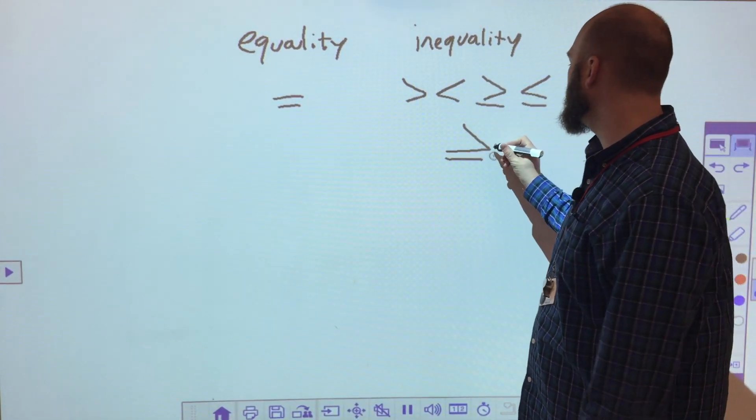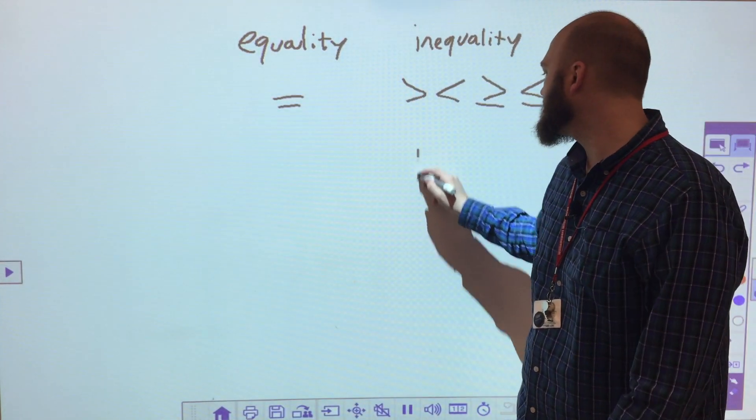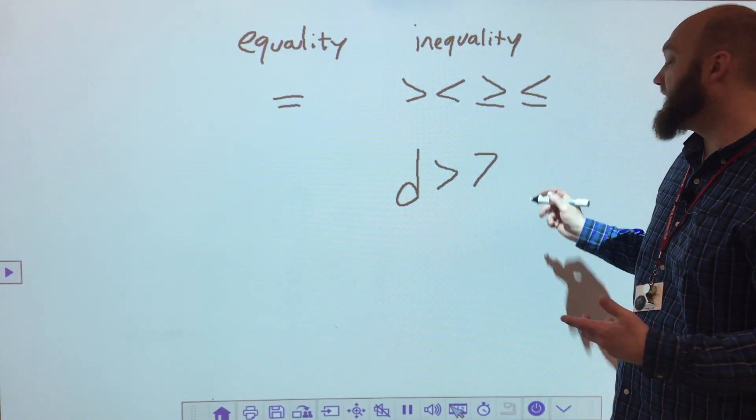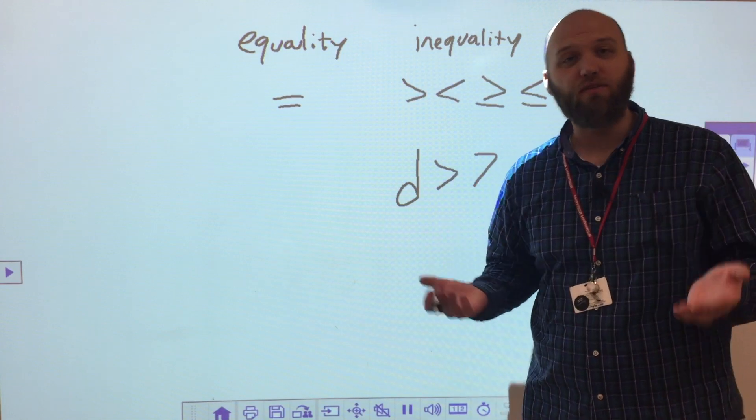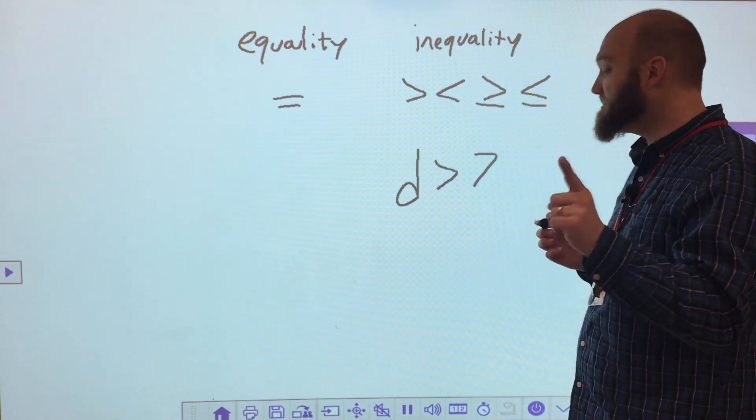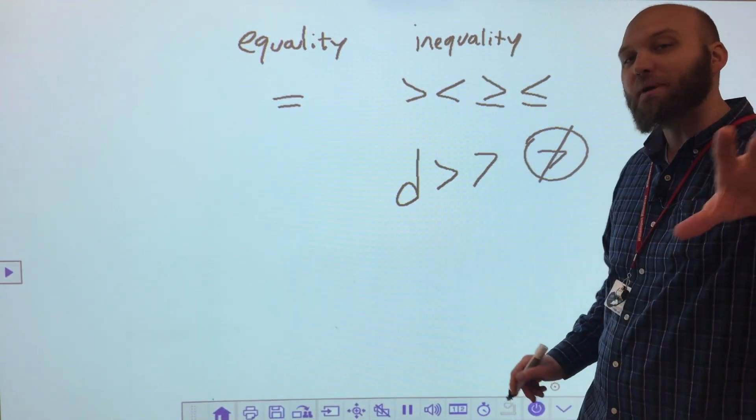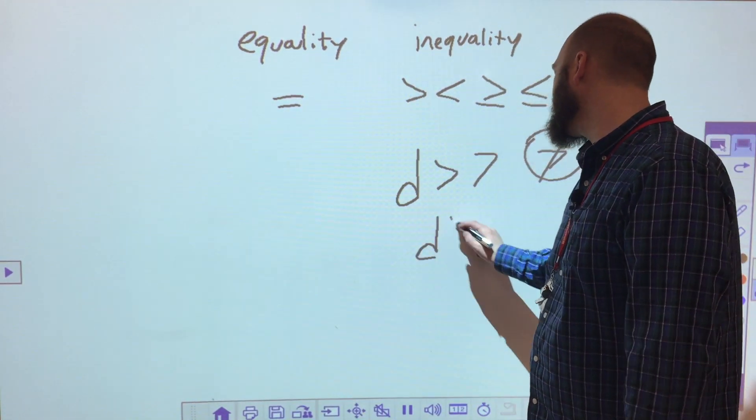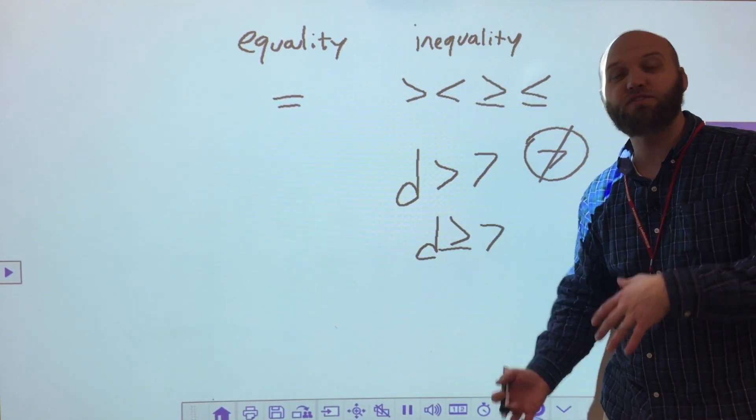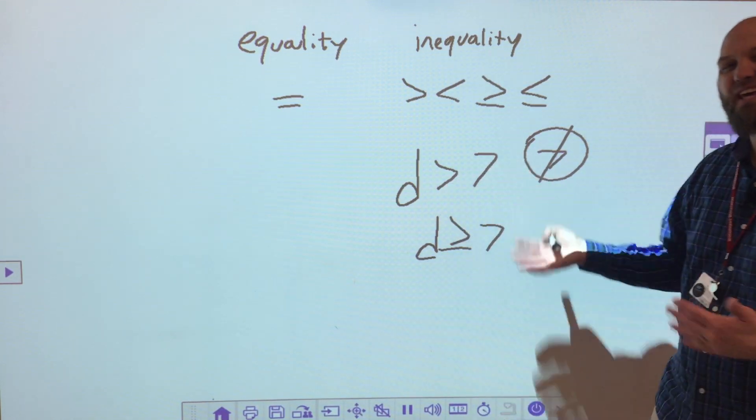So you'll see, typically, that line underneath means that, so if D were greater than 7, well, D could be 7.100, it could be 9,482. But one thing it cannot be is it cannot be 7, because it's not equal to 7. But if I changed it and I said D was greater than or equal to 7, well, then it could be 7.100, it could be 9,423, or it could be 7, because it can also be equal to 7.